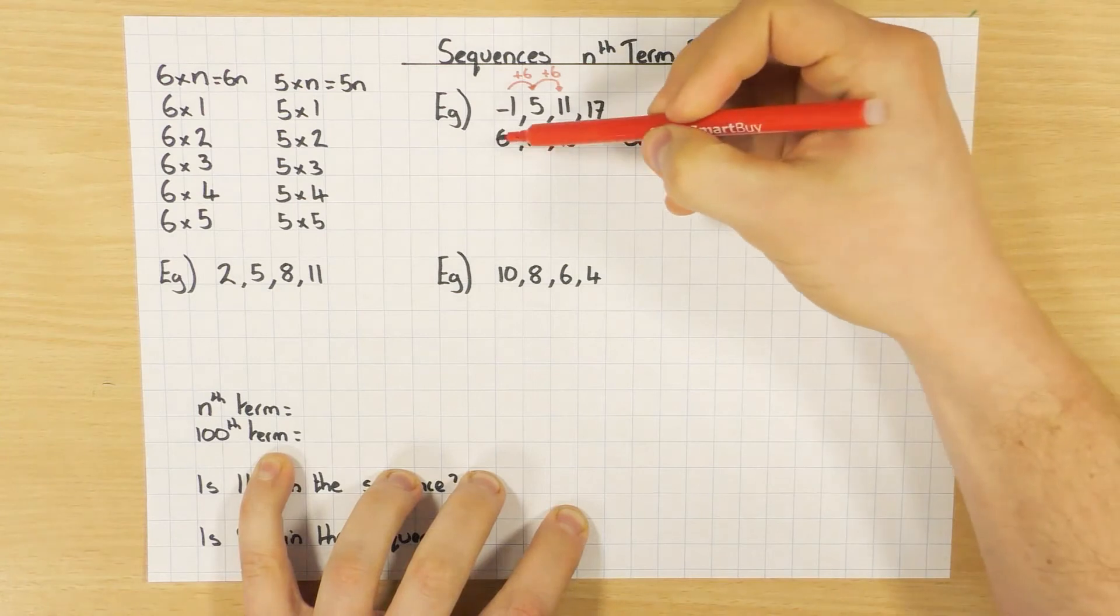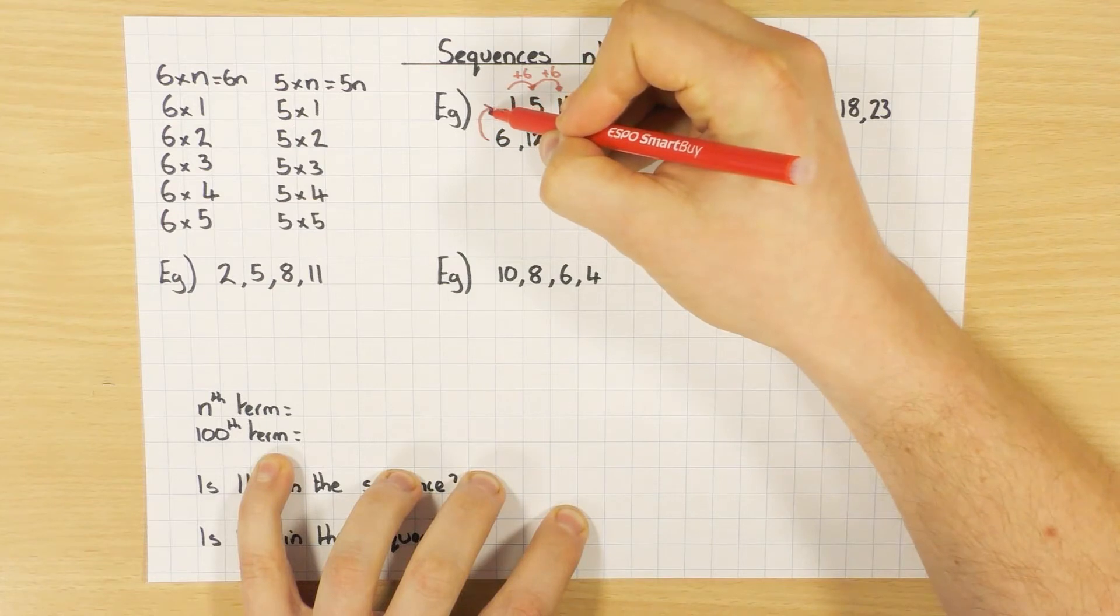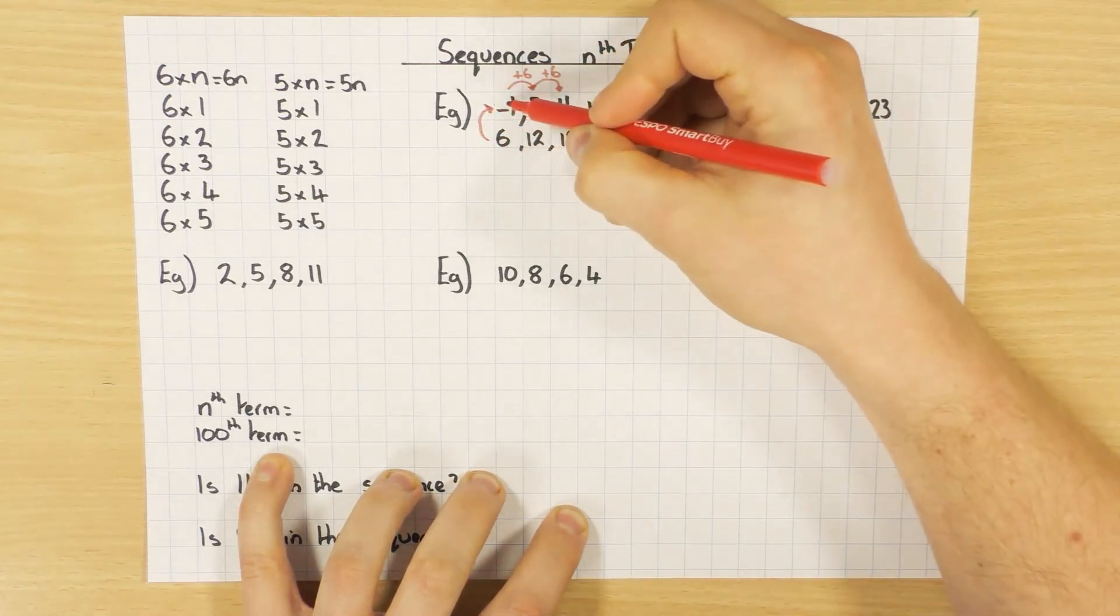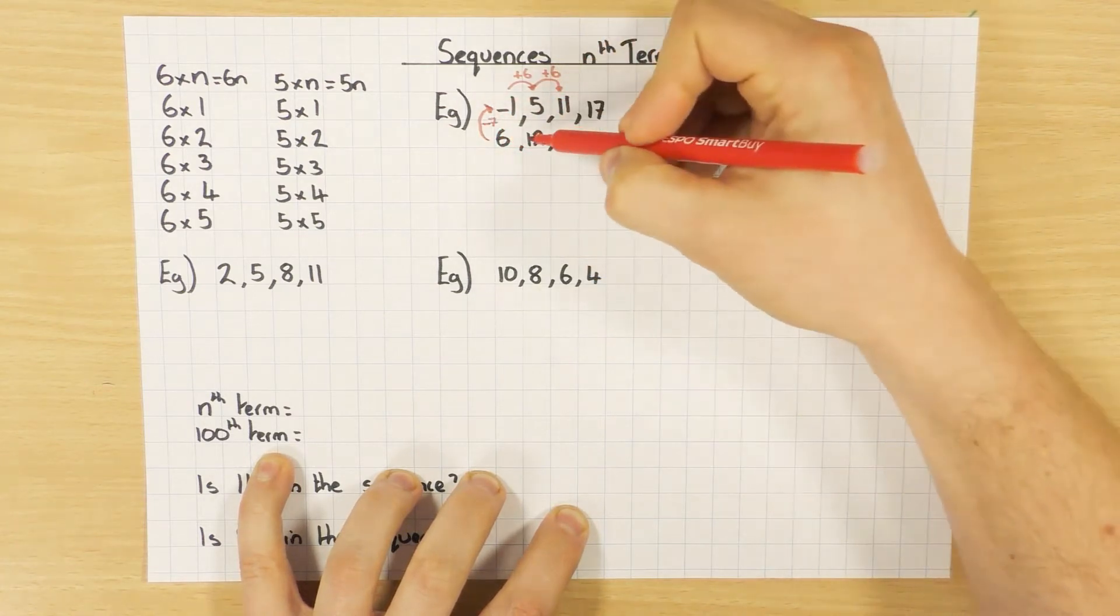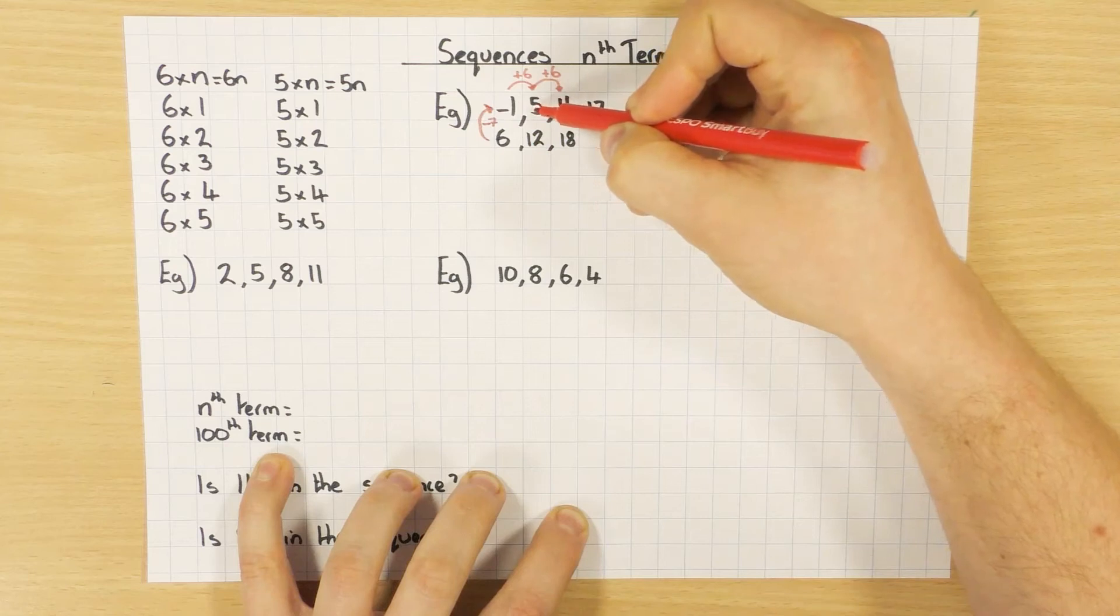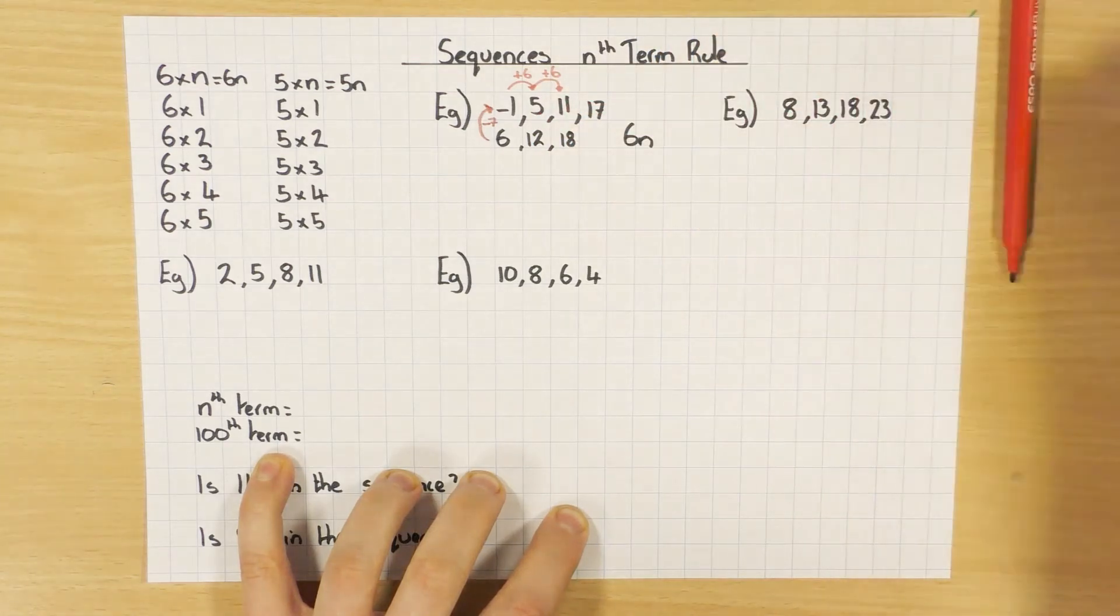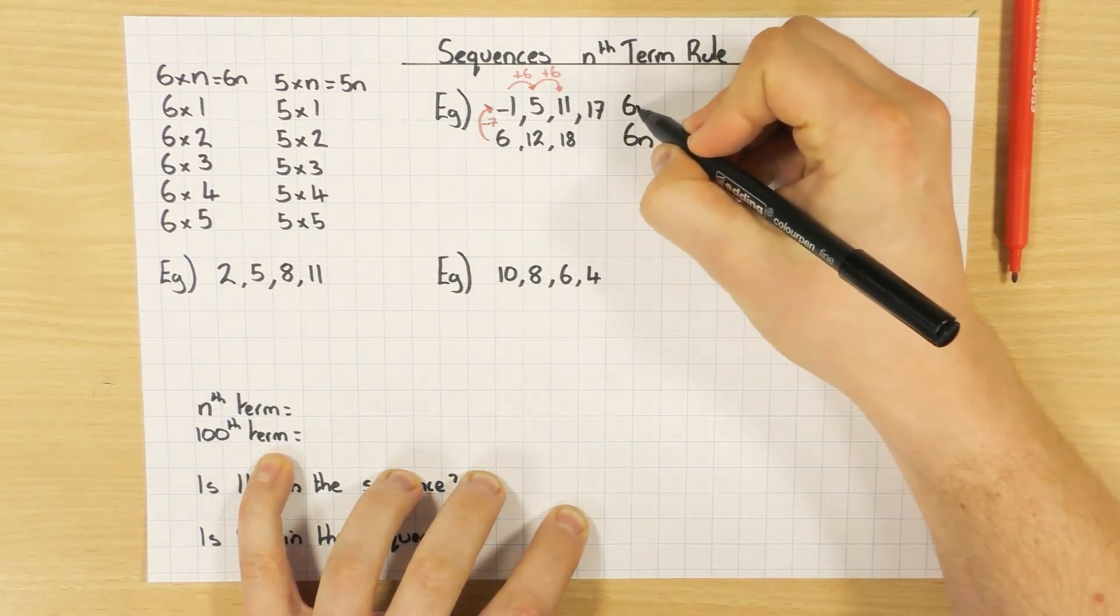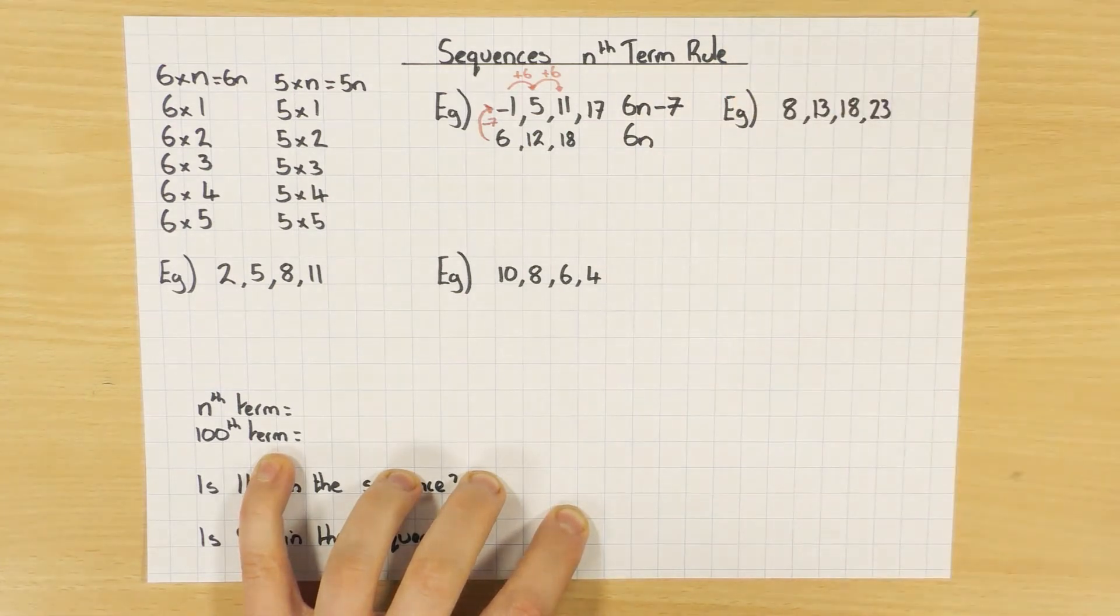So, what we do now is have a look. How do I go from the 6 times table back to my original sequence? So how do I go from 6 to minus 1? Well, I take away 7. Exactly the same thing here. 12, take away 7 gets to 5. 18, take away 7 gets to 11, and so on and so forth. So, the nth term rule would be 6n, because it's the 6 times table, and then take away 7. And that's how you work out the nth term rule. We'll do a few more examples.